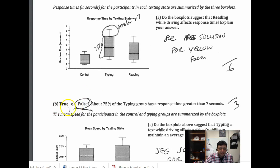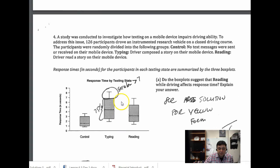And then this one here is very similar. The only difference was the question here, B: About 75% of the typing group has a response time greater than 7 seconds. It's 75% of the group has the response time less than 7 seconds, so you can take a look at that there. So you can see 7, and the 75% is below, so that's why this is false. That's it, the other solutions are the same.